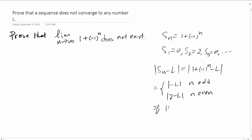If |L| ≤ 1/2, then |2 - L| > 1/2. And if |L| > 1/2, then |Sn - L| ≥ 1/2.